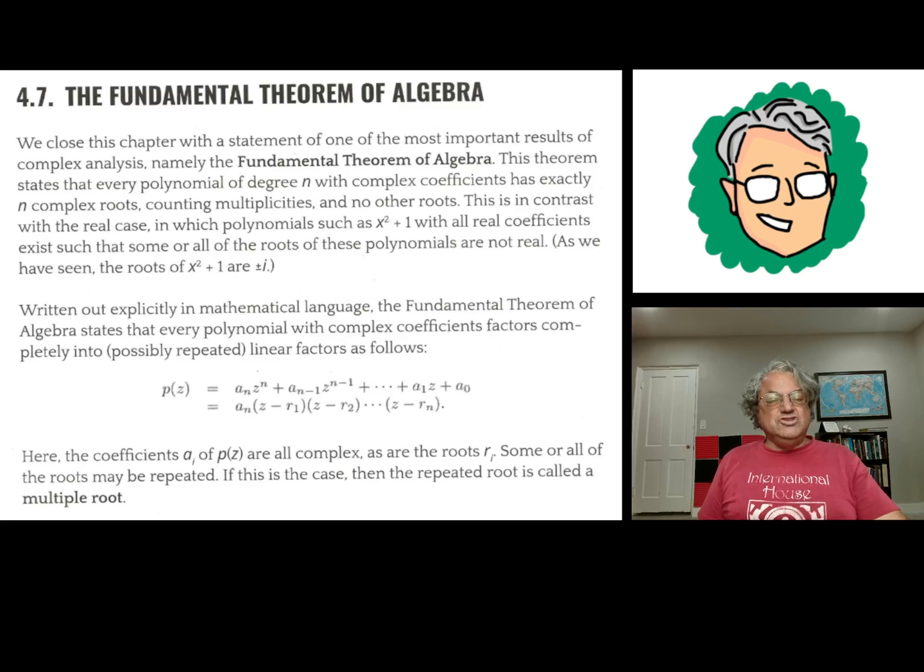And so what does the fundamental theorem of algebra say? It says that every polynomial, no matter how big its degree is, can be factored completely into linear factors. So in other words, you can always factor out the leading coefficient, the a sub n. And then the rest is just a product of linear terms: x minus r_1, x minus r_2, so on, up to x minus r_n, where these r_i's are the roots. So basically what it's saying, another way to say this, is that every polynomial, as long as its coefficients are complex numbers, has exactly n complex roots, counting multiplicities, if it's a degree n polynomial. So some of these roots might be repeated.